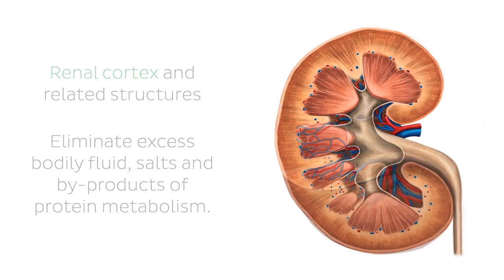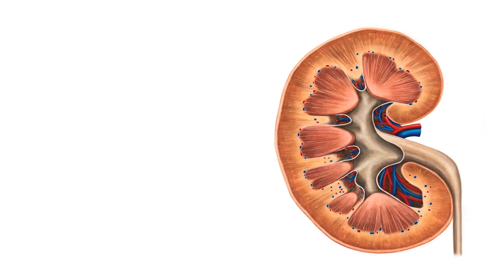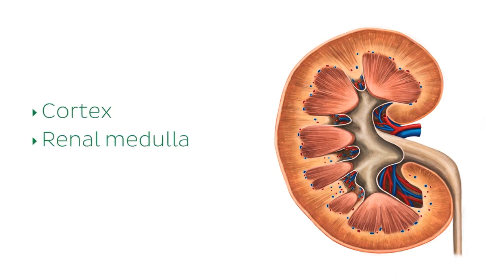The main body of the kidneys can be divided functionally into a cortex, a renal medulla, and the hilum. In this tutorial, we will discuss the renal cortex and other related structures.